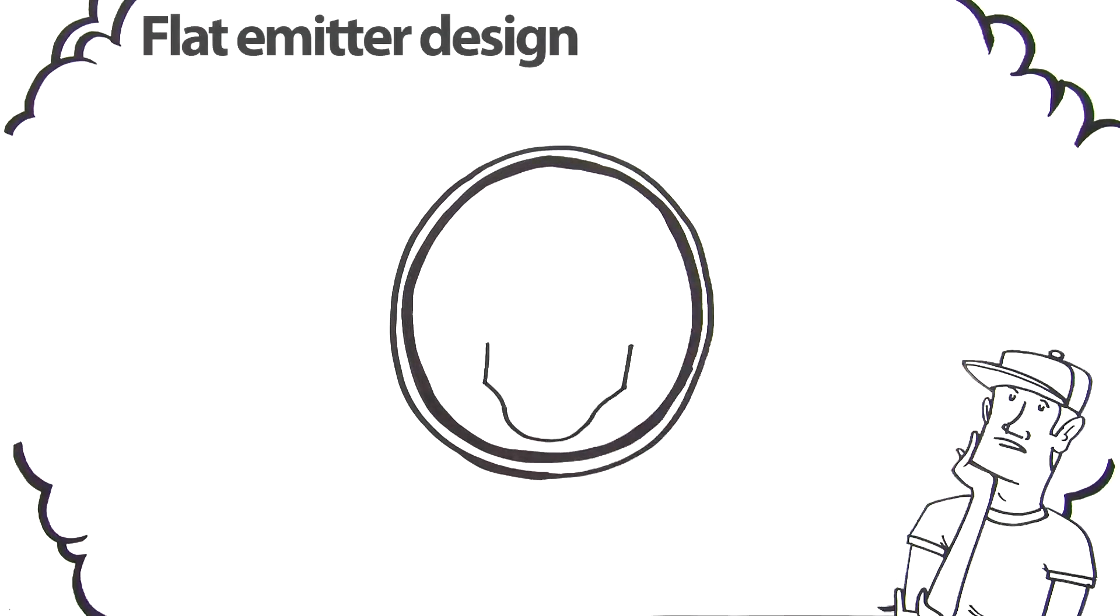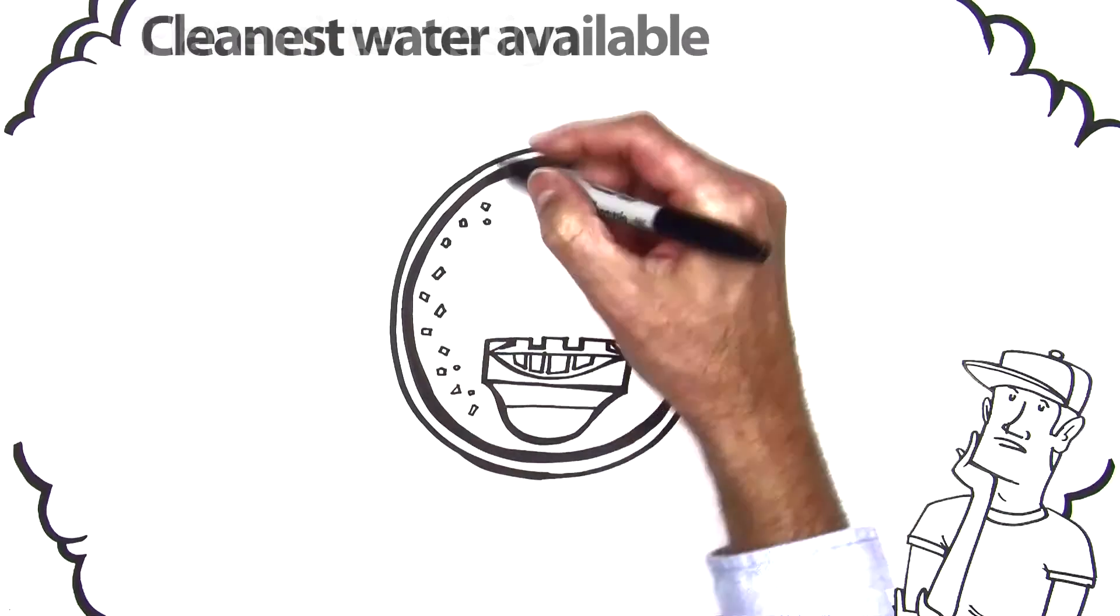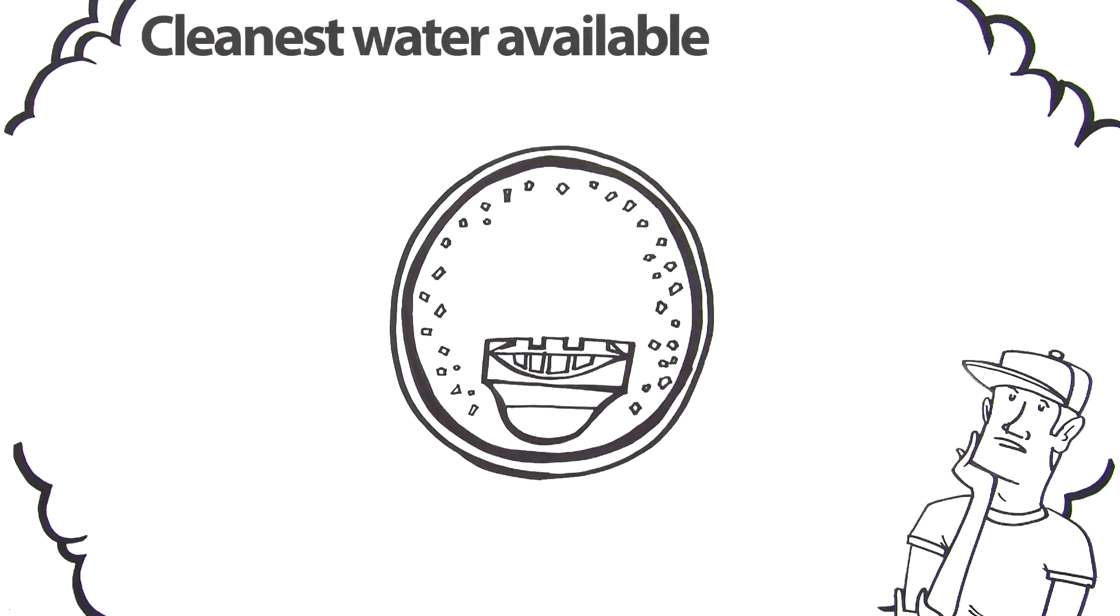You'd start by giving it a low profile so it could handle the dirtiest water. Most grit would flow around the emitter and only the cleanest water would go in.